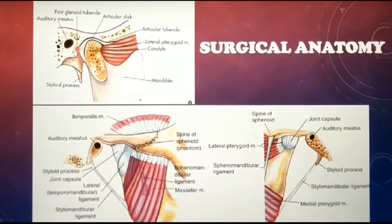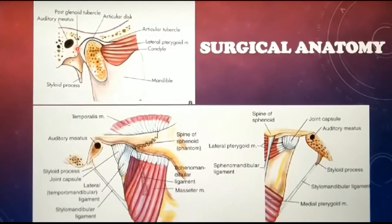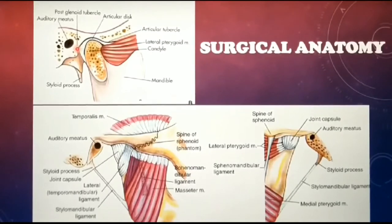The active components of the temporomandibular joint are the muscles of mastication — the temporalis muscle, medial and lateral pterygoid, and masseter. All these fall under the active components of TMJ.